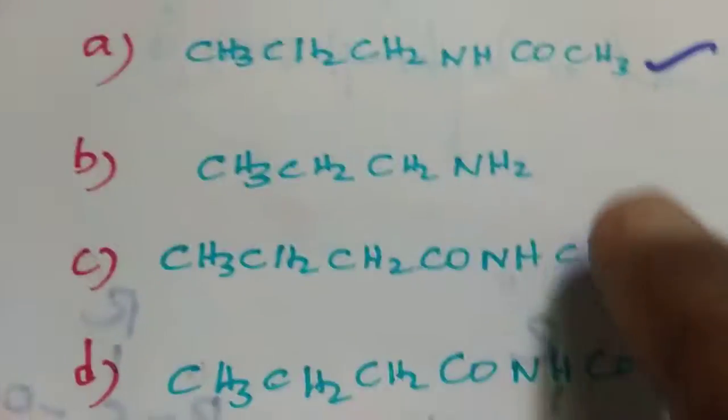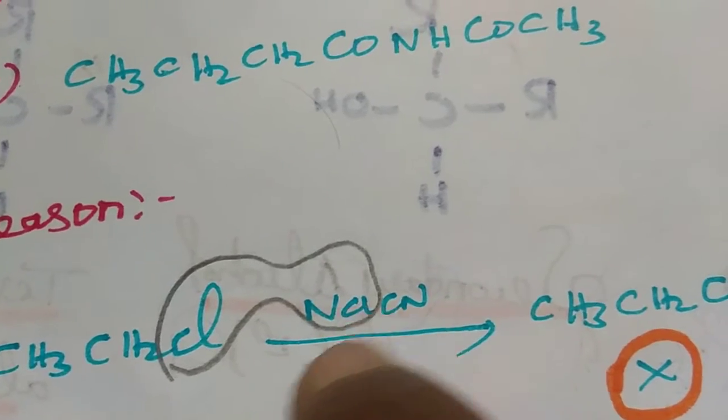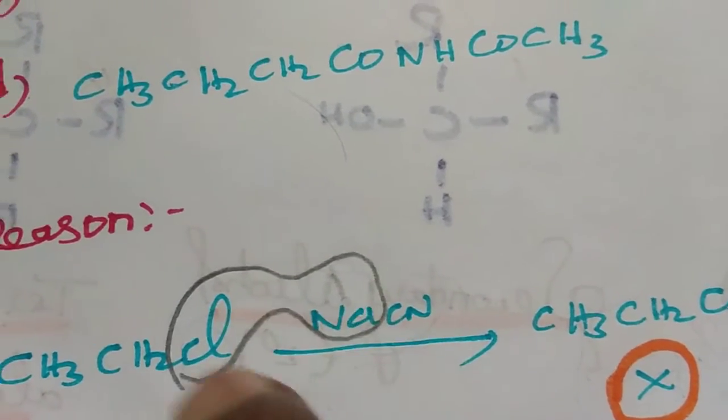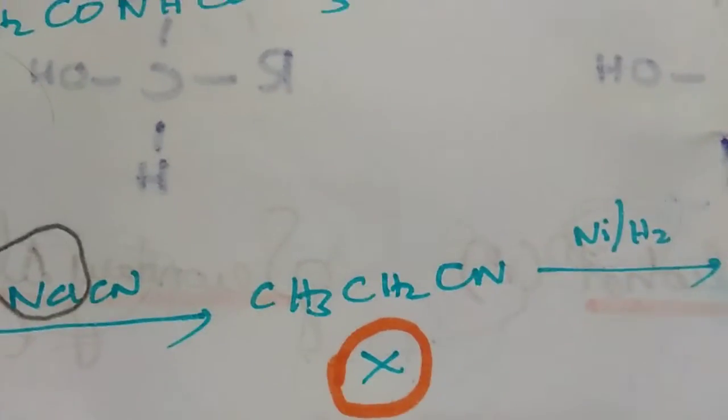The reason is: ethyl chloride is reacted with sodium cyanide, it is the removal of sodium chloride to form ethyl cyanide. This is the X.